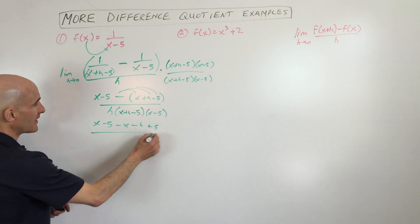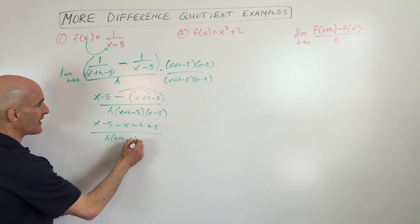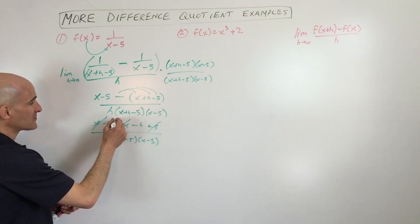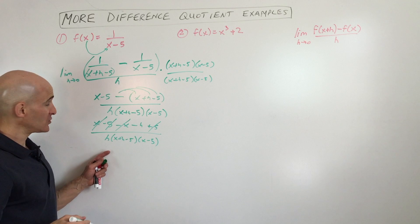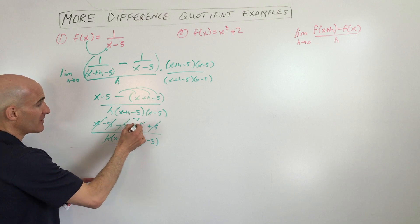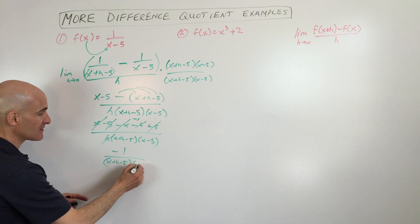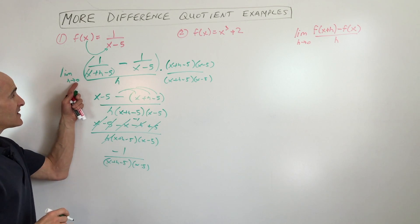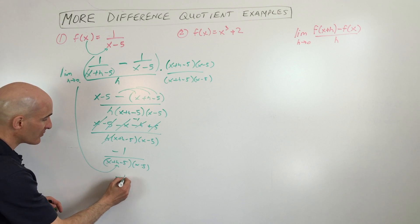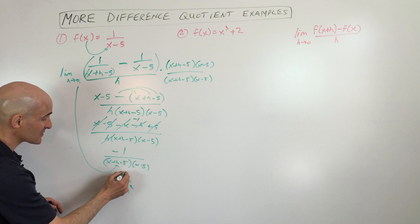So, distributing like so, that's all over h times (x plus h minus 5) times (x minus 5). You can see the x's are canceling and the 5's are canceling. We're just left with negative h over h. Now you can divide both by h, and you're left with negative 1 over (x plus h minus 5)(x minus 5). It's the limit as h approaches 0, so we put 0 in for h, and we're left with negative 1 over (x minus 5)(x minus 5), which is (x minus 5) squared.